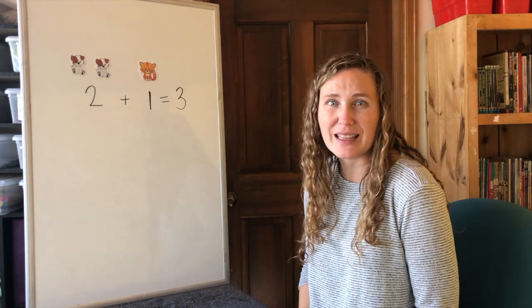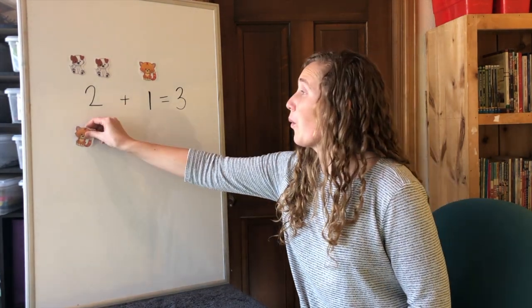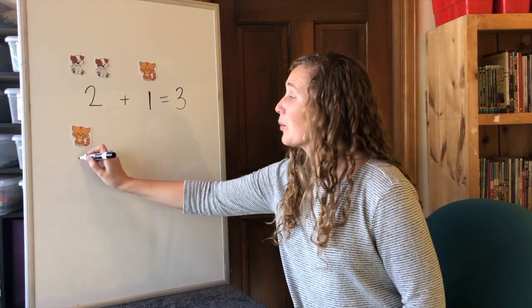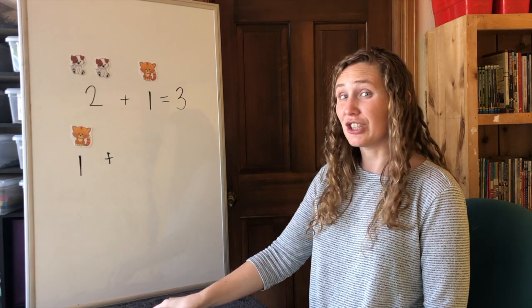What if I used the commutative property and added them the other way? Would my answer still be the same? Let me count my one cat first.